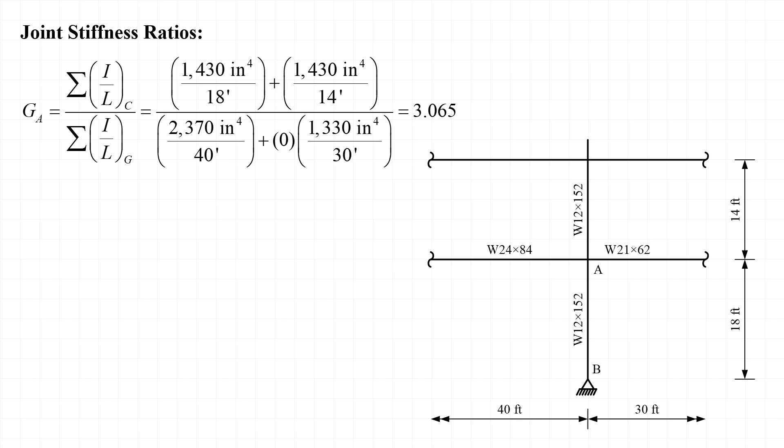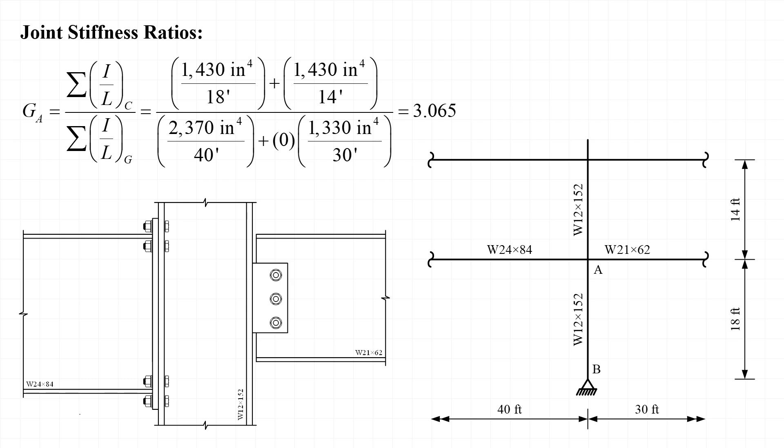We can now calculate the joint stiffness ratio G_A. There are two columns framing into joint A: one from above with a length of 14 feet and one from below with a length of 18 feet, both with I = 1430 in⁴. There are also two beams framing into joint A: one from the left with I = 2370 in⁴ and length 40 feet, and one from the right with I = 1330 in⁴ and length 30 feet. However, the beam from the right is not rigidly connected — the flanges of the W24x84 from the left are connected to the column.